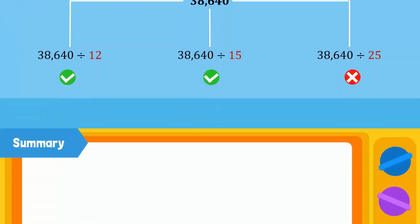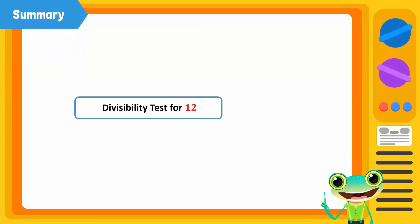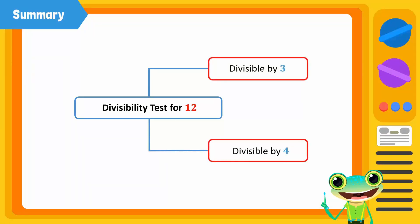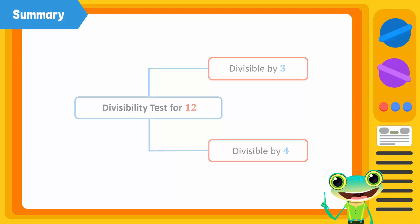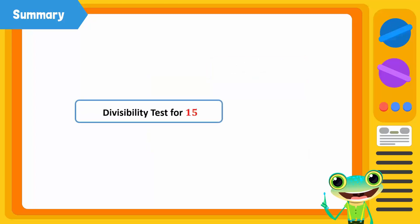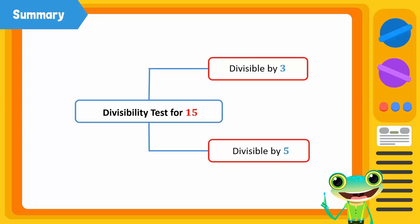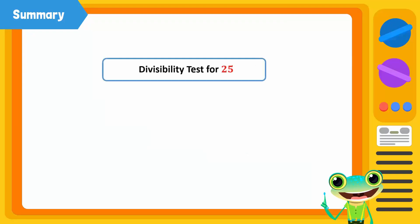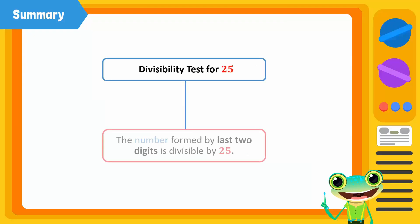Great job! For any number to be completely divisible by 12, it must also be divisible by 3 and 4. To find out if a number is evenly divisible by 15, you must check that it is also divisible by its factors 3 and 5. For any number to be completely divisible by 25, the number formed by its last two digits should also be divisible by 25.